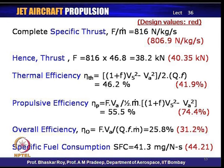Multiplying the specific thrust by the off-design mass flow, the engine thrust comes out to be 38.2 kN, which is less than the design thrust of 40.35 kN. Even though specific thrust is slightly higher, the actual thrust is lower because the mass flow is approximately 5–8 percent lower than the design value.